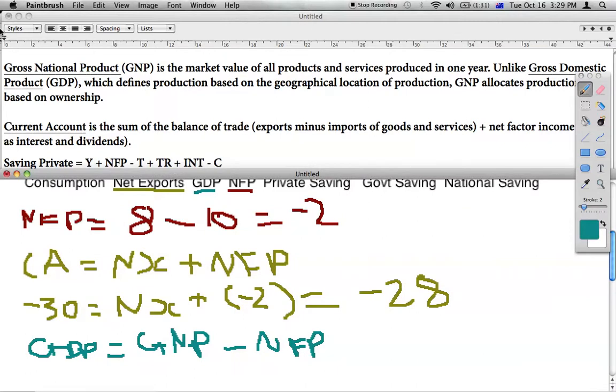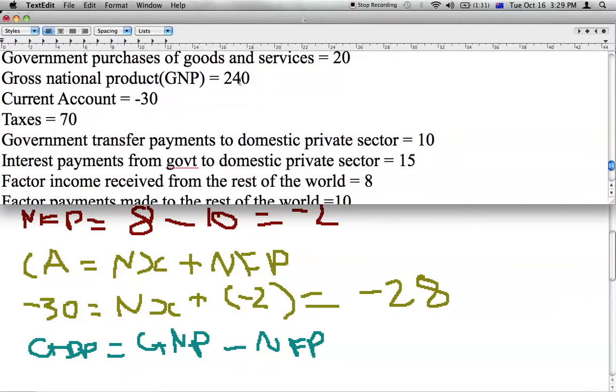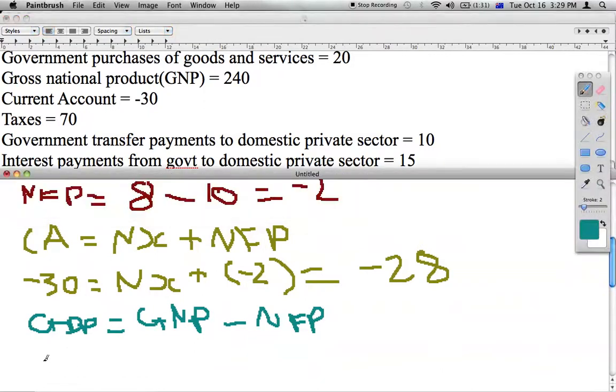So GNP, looking in the data, was given to us as 240. It should be GDP equals 240 minus the net factor payments, so minus, and I just put in brackets, minus 2. So do that on your calculator, it will equal 242. So that's our GDP.